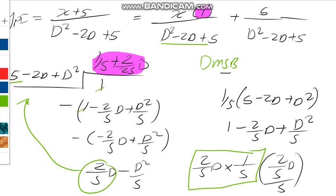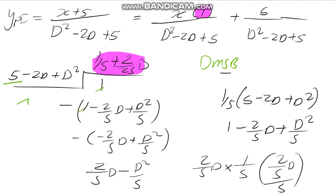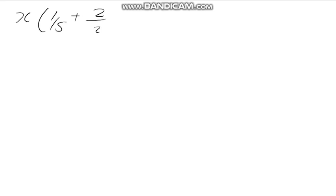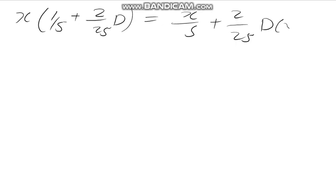Remember, on the equation we said ignore the X and take 1 over the denominator. So we substitute back: X times 1 over 5, plus the remainder 2/25 D. This gives X over 5 plus 2/25 D of X. Since D of X is the differentiation of X, we get X over 5 plus 2/25.